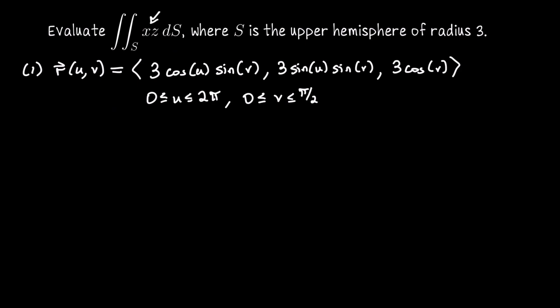Since the integrand is f(x, y, z) = x times z, I want to evaluate f on this parametrization — that is, find f(r(u, v)). It's the product of the first coordinate and the third coordinate, so that's going to be 9 cosine(u) cosine(v) sine(v).